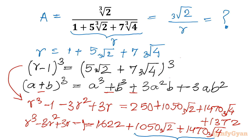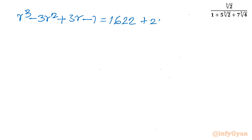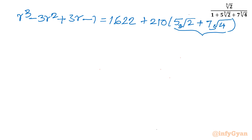Taking 210 common: R³ minus 3R² plus 3R minus 1 equals 1622 plus 210 times (5 cube root of 2 plus 7 cube root of 4). You can see that bracket is just R minus 1, because that was our definition of R minus 1. So this value will be R minus 1.